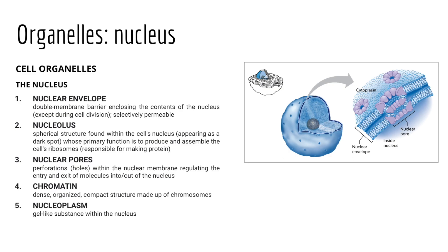Within the nucleus are one or more spherical bodies called nucleoli, which function in producing ribosomes. Each nucleolus is an accumulation of DNA, RNA, and proteins not surrounded by an enclosed membrane. Nucleoli become considerably enlarged when the cell is actively making protein. Within the nucleus, we also find the cell's hereditary units called genes, which control cell structure and direct cellular activities. Genes are arranged in single file along chromosomes, and each chromosome is a long molecule of DNA coiled with proteins and some RNA in what we call chromatin. Finally, the nucleoplasm is a gel-like substance within the nucleus that suspends these various components.